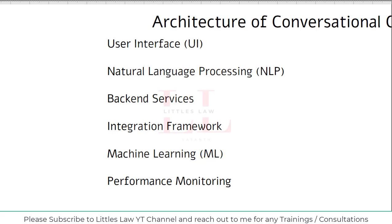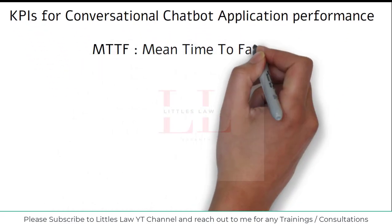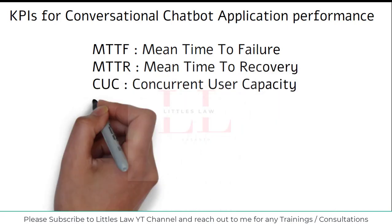User satisfaction is also assessed through feedback surveys or ratings. Tools used include APM — application performance management — which monitors the chatbot's operational health including server performance and uptime, plus analytics dashboards providing insights into user interaction trends and overall performance. Continuous monitoring helps identify and resolve issues, optimize performance, and ensure a high-quality user experience.